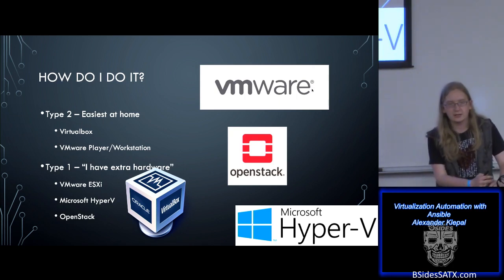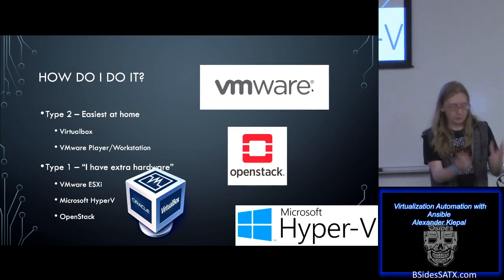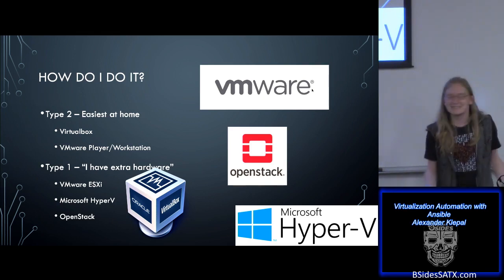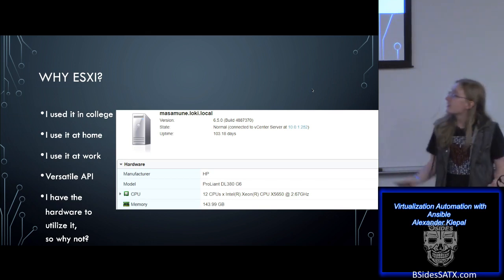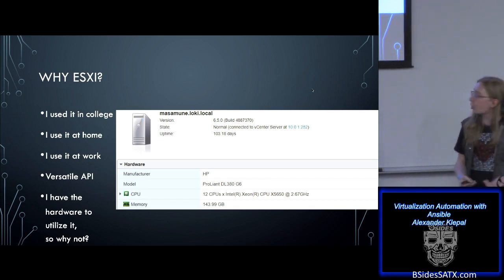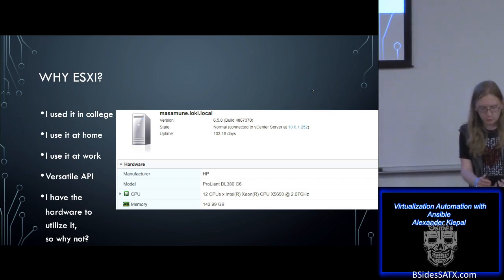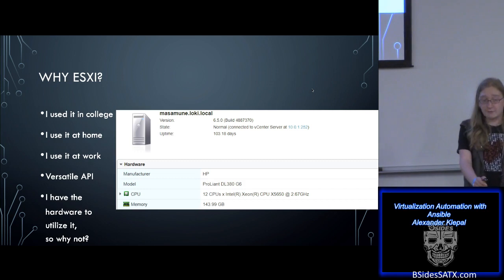You could also use OpenStack — and if you say it walks like a duck and talks like a duck, it's a hypervisor. So why choose ESXi? It's expensive — not if you get the free version. I use it because it's kind of what I grew up with in college and at home in my personal home lab and at work. It has a very versatile API, so you're able to make calls to it with integrated DevOps tools like Ansible. I have the hardware at home — my beautiful ProLine — so why not use it?